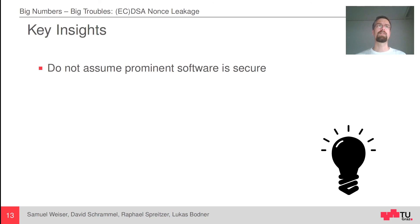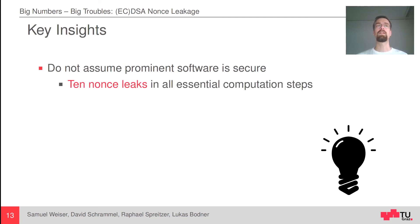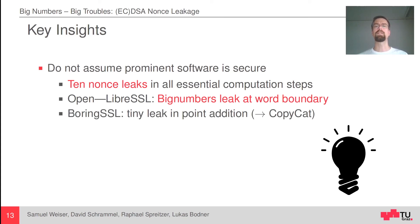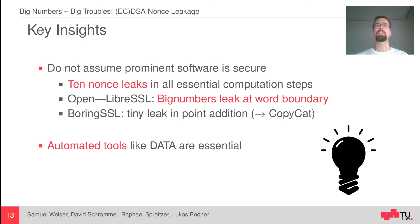Let's sum up the key insights of this work. First, we should never assume that prominent software is just secure because many people have had a look at it. In fact, we found 10 nonce leakage vulnerabilities, many of which were unknown previously, found in all essential computation steps of ECDSA. For OpenSSL and LibreSSL, we found serious issues with big numbers — whenever a big number is close to a word boundary, slightly above or slightly below, a leakage may happen. Luckily, BoringSSL did a better job; we only found a tiny leak in the point addition I showed before. Automated tools like DATA were an essential step for finding many of those vulnerabilities, but as a warning: you need to know what you are looking for, otherwise you are really searching for a needle in a haystack.